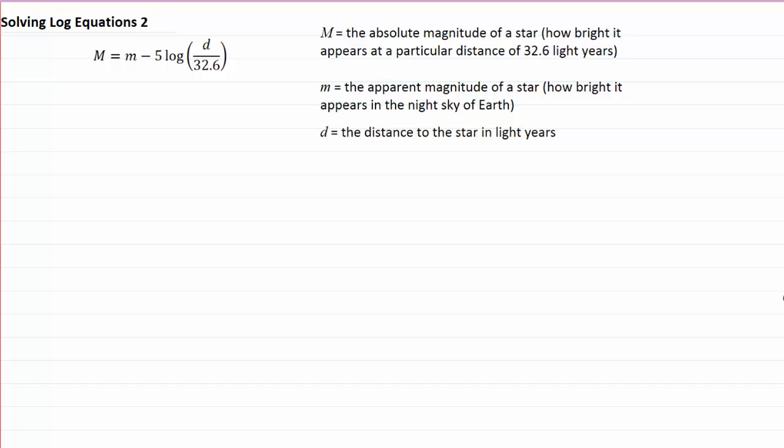The lowercase m is the apparent magnitude of the star, and that's just how bright it appears in the night sky of Earth. The lowercase d is the distance to the star in light years.